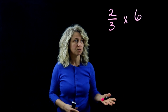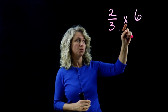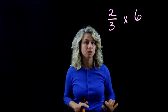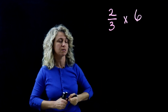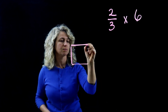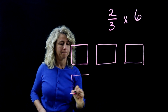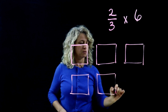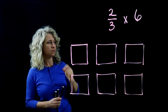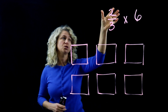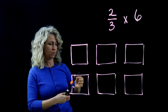Now let's look at a different type of problem — a fraction times a whole number. If you multiply straight across, you put a one underneath the whole number and multiply across. For the model, start with the second number, the whole number six, so we need six boxes. Separate those boxes into thirds, because we're going to shade two-thirds on each box.